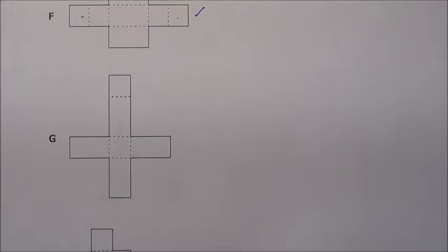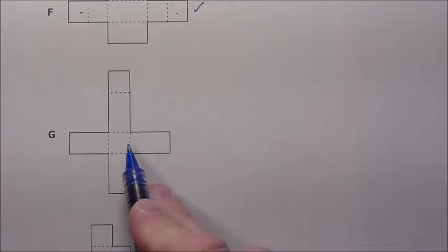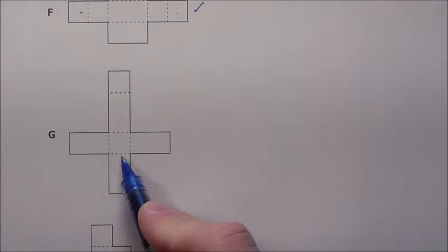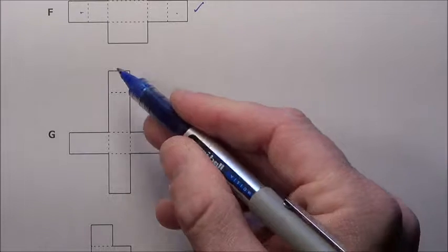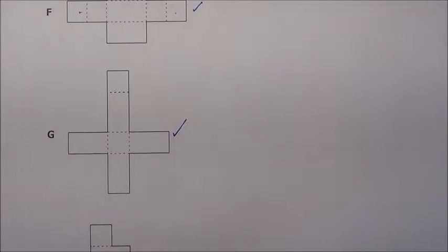When we look at G, everything is going to fold up here. This edge is going to come popping up, this edge is going to fold and be popping up, same here, same here, and then this piece will flip over and cover the top. So G also will make a rectangular prism.